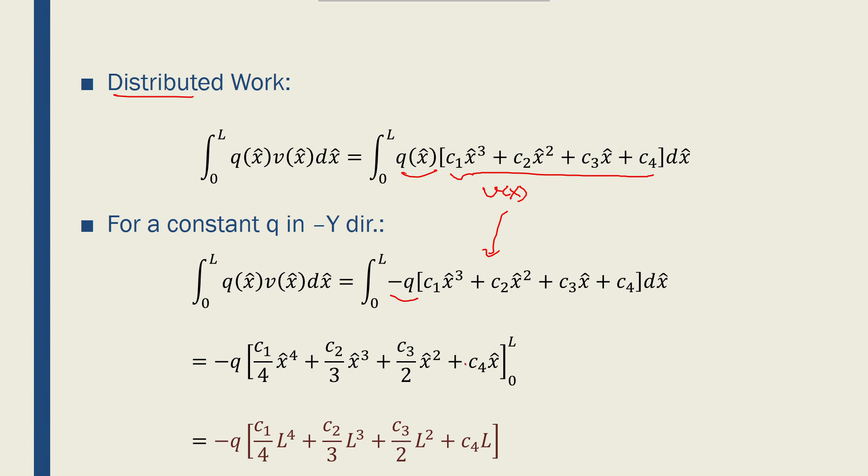We'll have minus Q times [c1/4·x⁴ + c2/3·x³ + c3/2·x² + c4·x] from 0 to L. If I put 0 in x, it will all become 0. So I only need to put L there. I'll end up with minus Q times [c1/4·L⁴ + c2/3·L³ + c3/2·L² + c4·L].